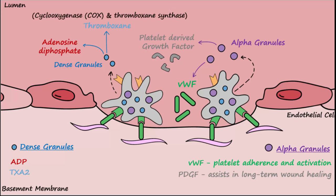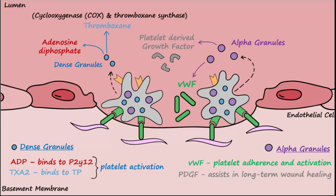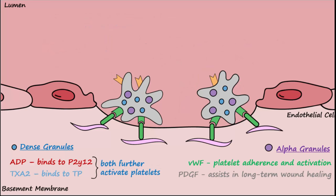Additionally, thromboxane, abbreviated TXA2, is made inside the platelet using several enzymes including cyclooxygenase and thromboxane synthase, and is released from the platelet cytoplasm. ADP and thromboxane bind to their respective receptors, P2Y12 and TP receptors, on additional circulating platelets. This binding causes additional platelets to become activated.